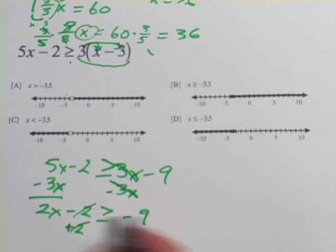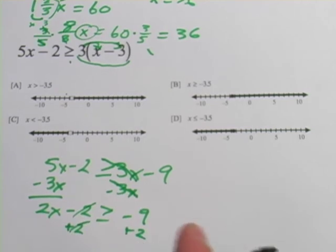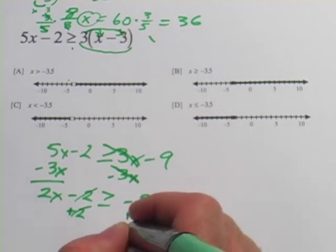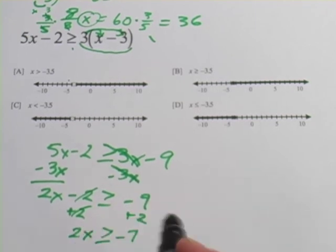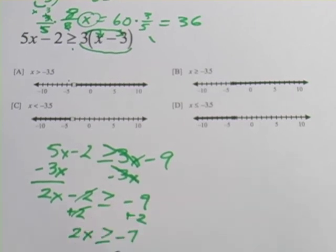That adds up to 0. Negative 9 plus 2 would be negative 7. We'll rewrite it again. So now I've got 2x is greater than or equal to negative 7.